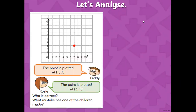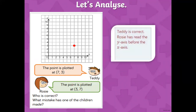Now this is Teddy and Rosie — looks like they are having trouble coming to a conclusion. Teddy says the plotted point is at (7, 3), but Rosie says it is at (3, 7). Who is correct? (3, 7) means 3 is the x-axis and 7 is the y-axis. Rosie is incorrect and Teddy is correct. Rosie is trying to read the y-axis before the x-axis, which is the mistake she has made.